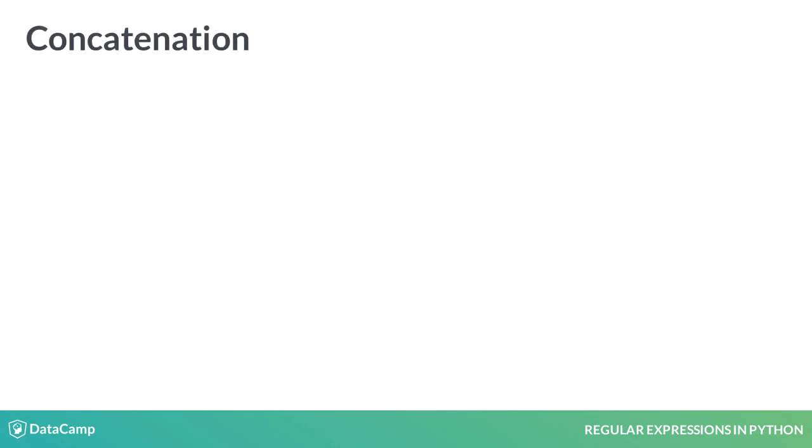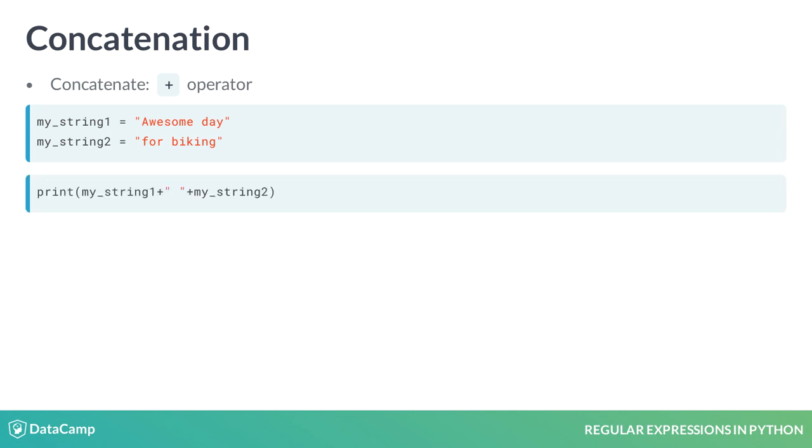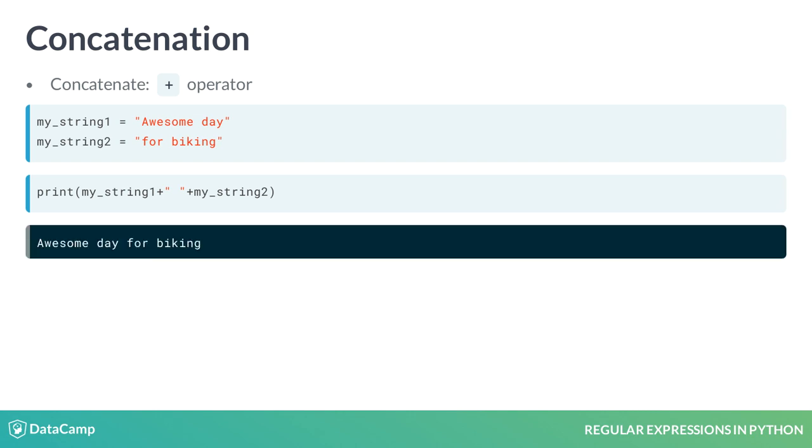Suppose now we have the following two strings shown in the slide. You want to concatenate them. Concatenate means obtaining a new string that contains both of the original strings. Applying the plus operand to sum up both strings, specifying also the space, generates the output seen in the code.